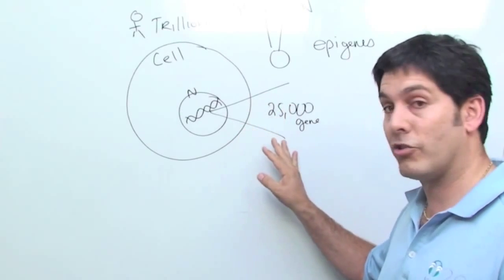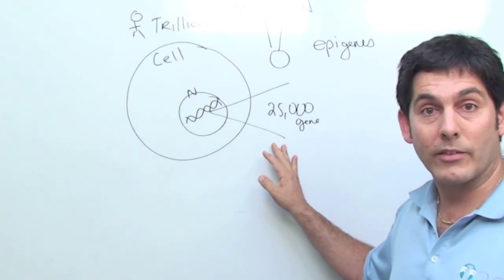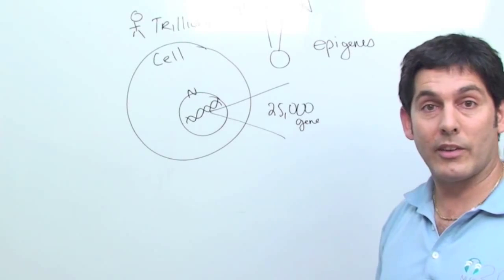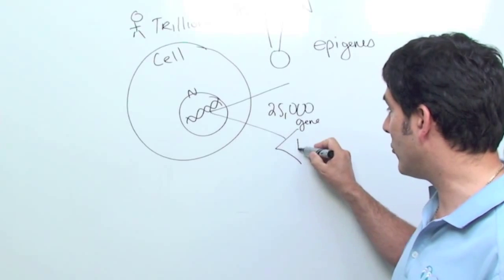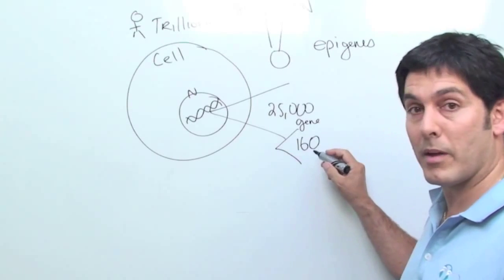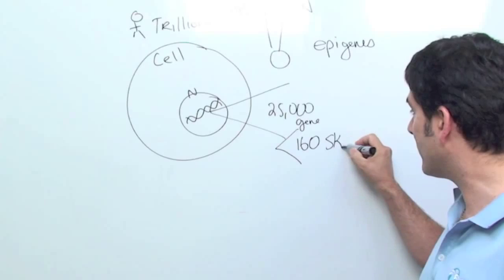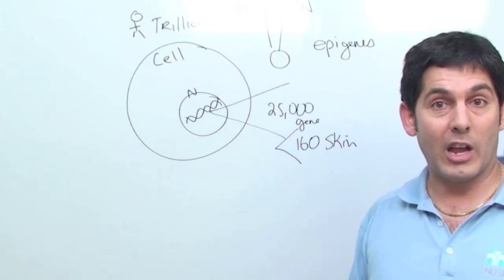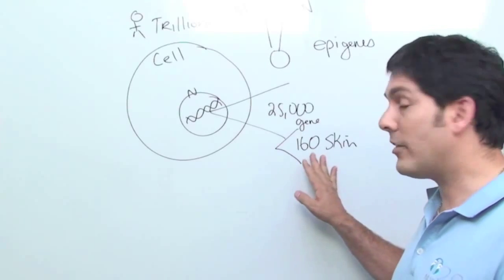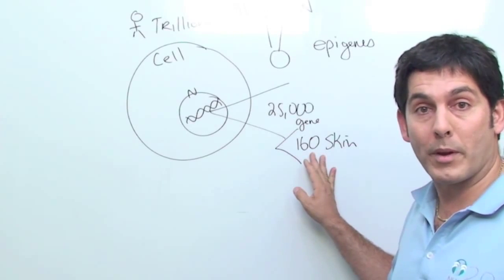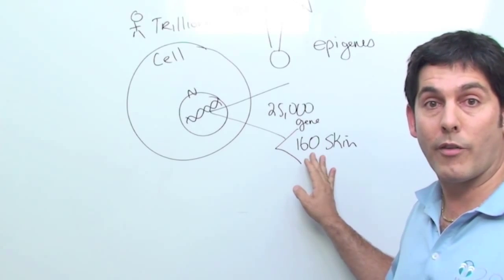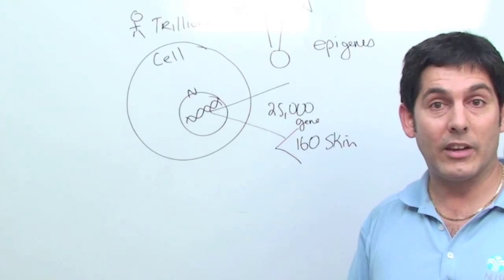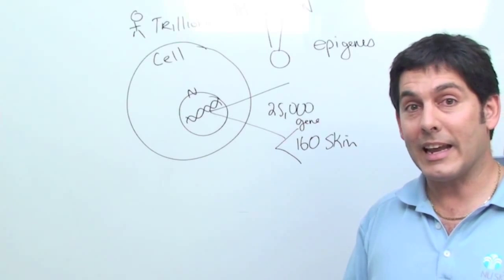So which of these 25,000 genes are to do with your eyes, your liver, your kidneys, your skin? And they have been able to tell us as a company that of the 25,000 genes, approximately 160 of them have to do with your skin. And so for us as a company, we were able to go for the first time ever, literally, and say, let's look at these 160 genes. Let's create a formula and see if we can turn on or turn off these little epigenetic tags to see if we can get the skin behaving like it did or expressing itself like it did when it was younger.